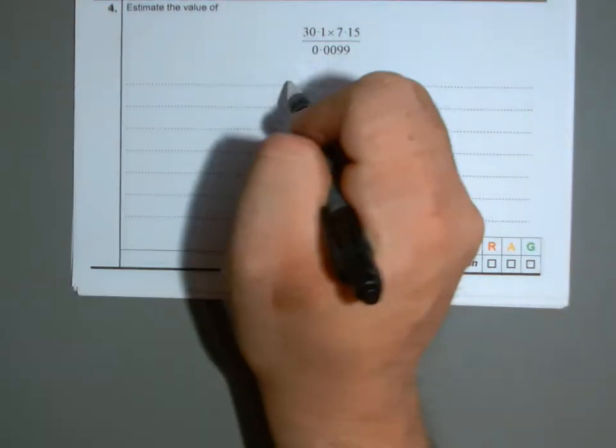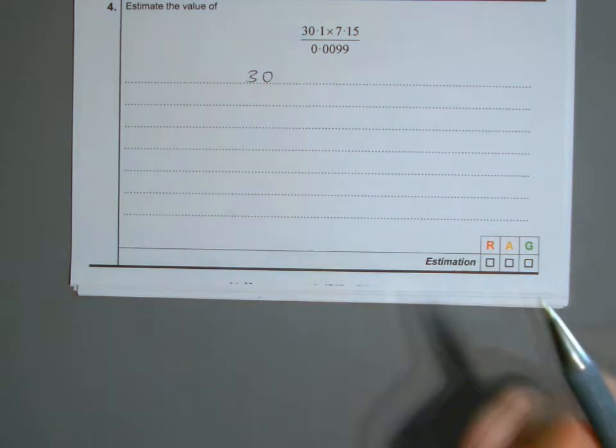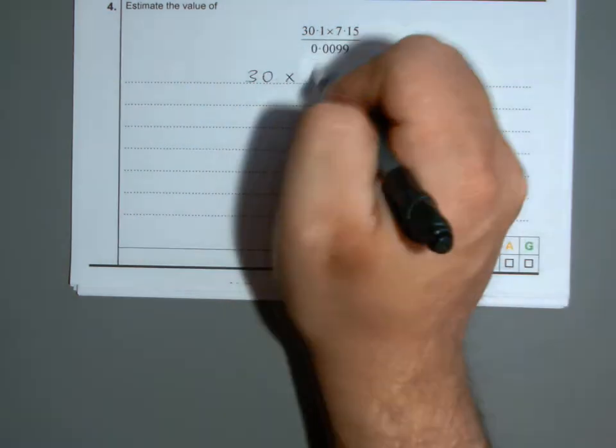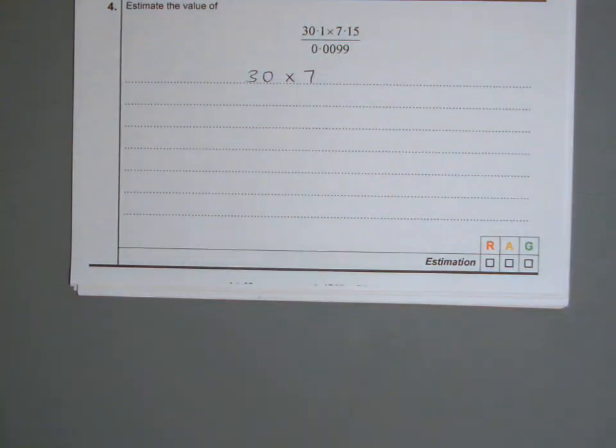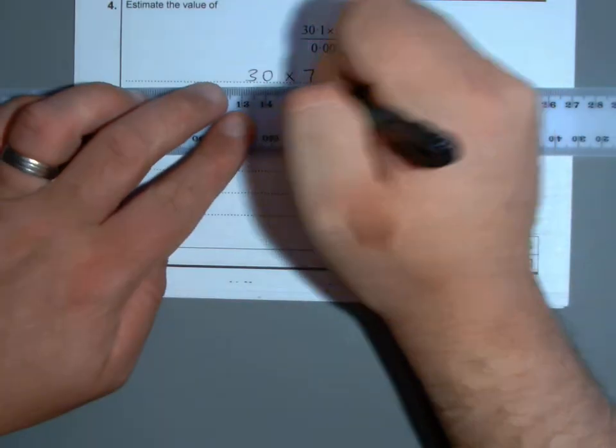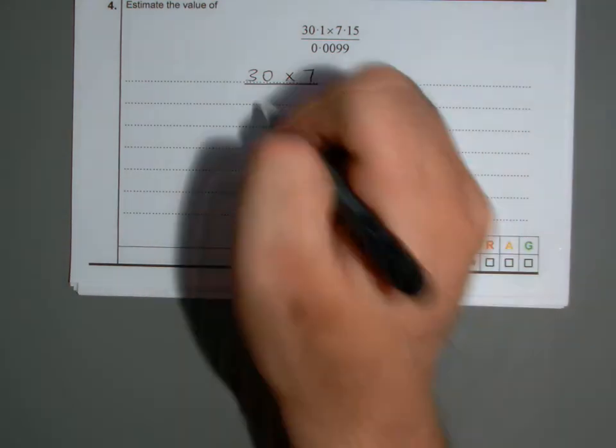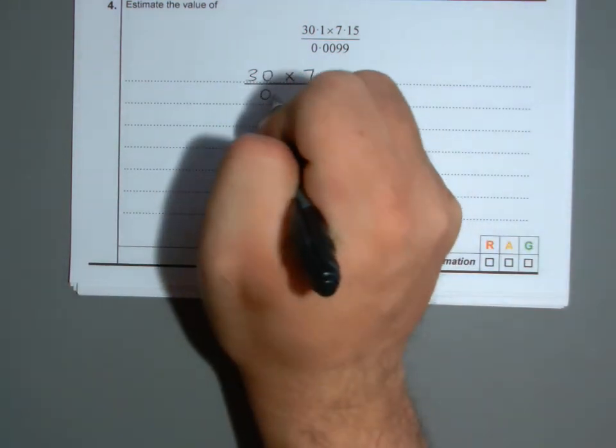Estimate the value. Remember, you have to find suitable estimates here. 30.1 clearly will become 30, that's sensible. 7.15, one significant figure. Now on the denominator, it doesn't look very nice, but we'll appreciate that this is very close to, if we were to round that to say two decimal places.